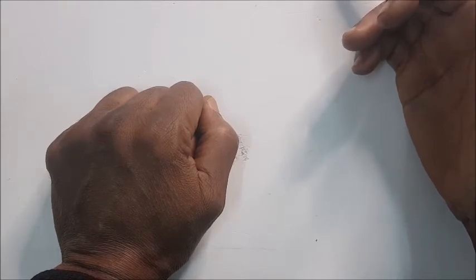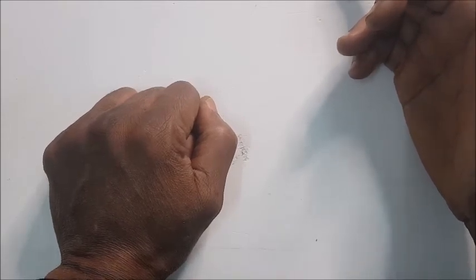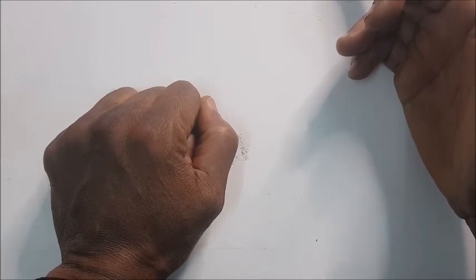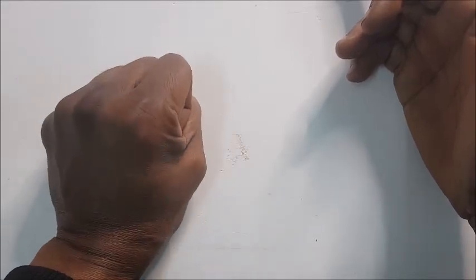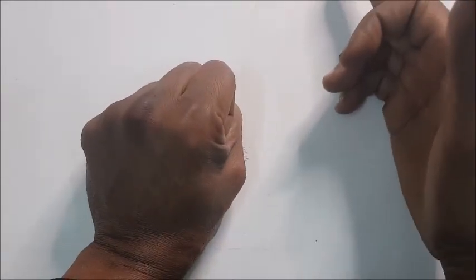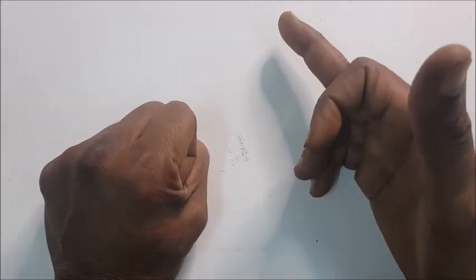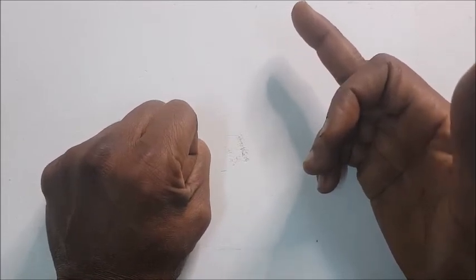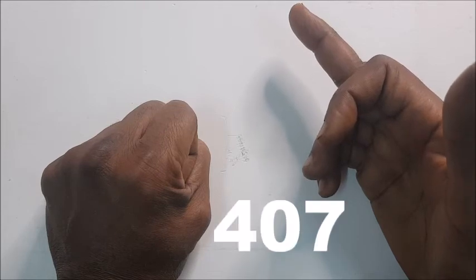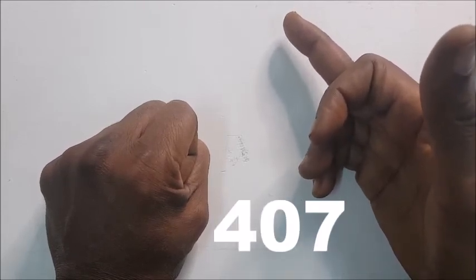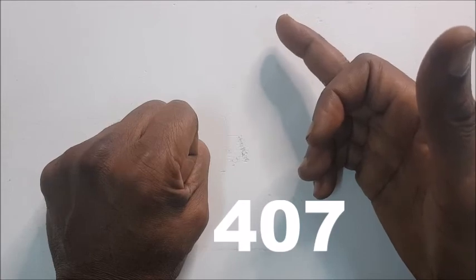We shoot this one up. And then 3 plus 7 is 10, so the last one when you add them up is 0. The last one is 0. So we have 407. 37 times 11 is 407.